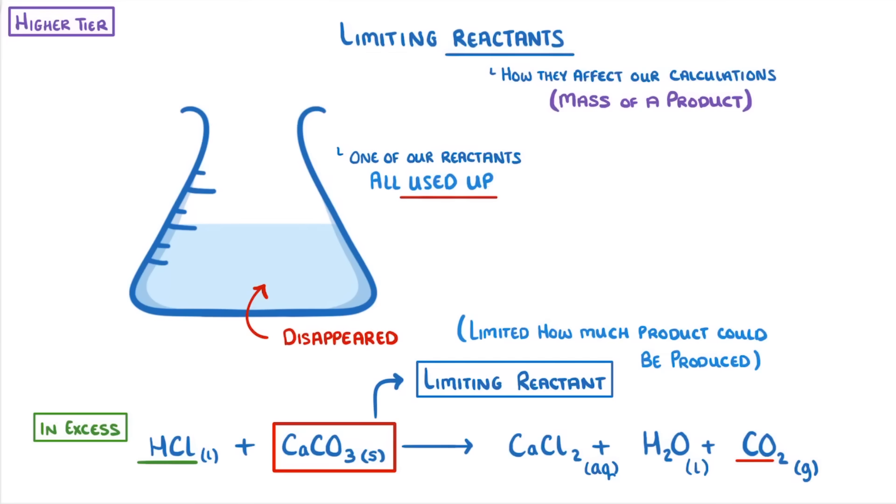The reason this is important is because how much product we get depends entirely on the limiting reactant. For example, if we add more calcium carbonate, we'll see more fizzing as more products are made.